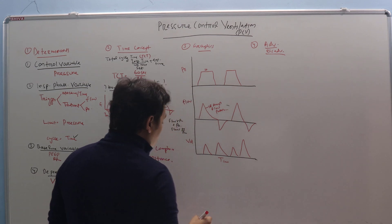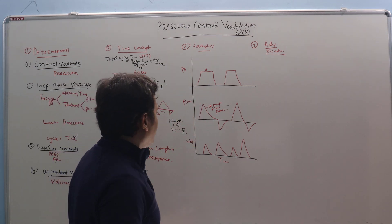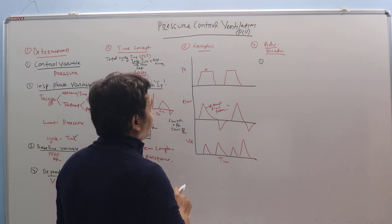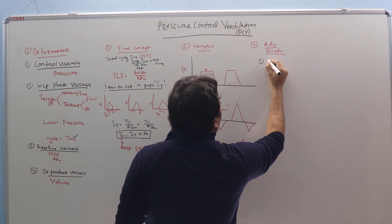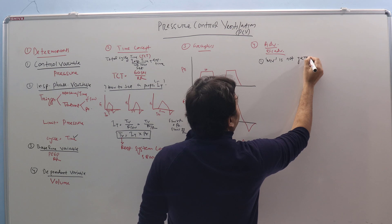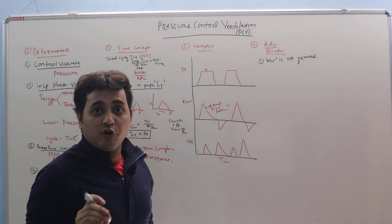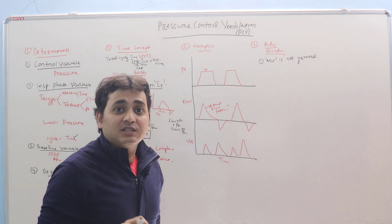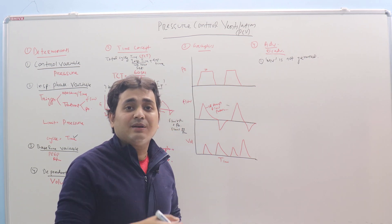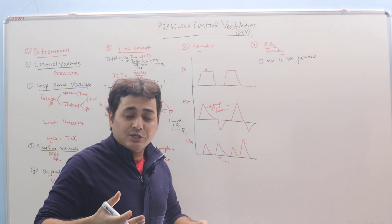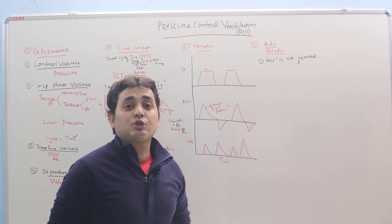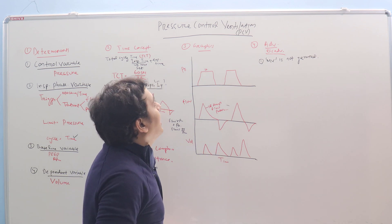Now coming to Advantages and Disadvantages. The first disadvantage is that minute ventilation is not guaranteed, because we are not setting the tidal volume or minute ventilation — only the pressure. So if there is some kink, clot, or secretion, the set pressure will be achieved earlier and the tidal volume may not be delivered, causing the patient to hypoventilate. This is one of the biggest problems in pressure control ventilation. If you have to set one alarm in this mode, it should be the low volume or minute ventilation alarm.